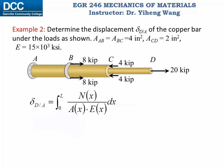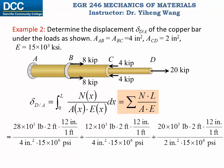Now we know Nx, the internal normal force as a function of location. The cross-sectional area and Young's modulus are all given. Because this member can be divided into three segments — AB, BC, and CD — and within each segment the internal normal force, cross-sectional area, and Young's modulus are all constants, the general equation can be rewritten into the special form: total displacement equals the summation of NL over AE. N is the internal normal force constant within the segment, L is the length of the segment, A is the cross-sectional area, and E is Young's modulus. Substituting all values with consistent units, the total displacement is 0.032 inch.